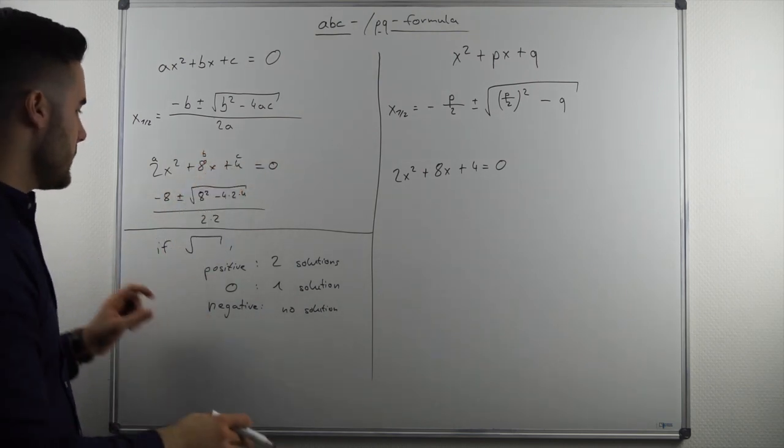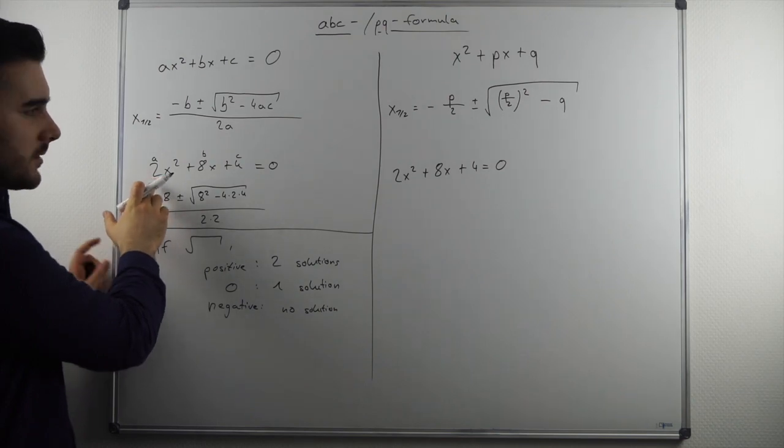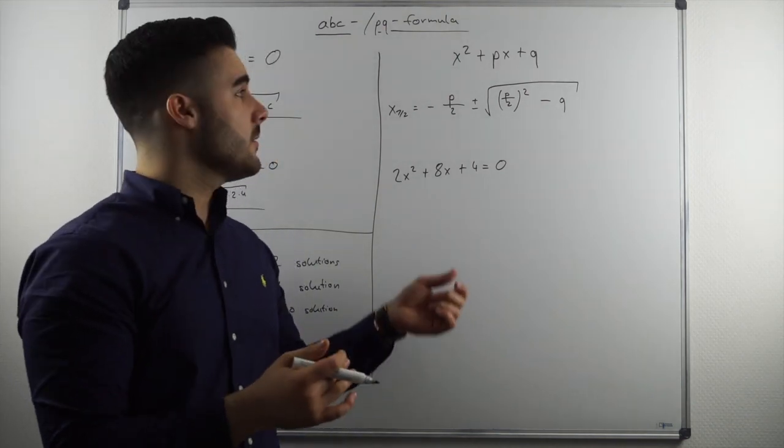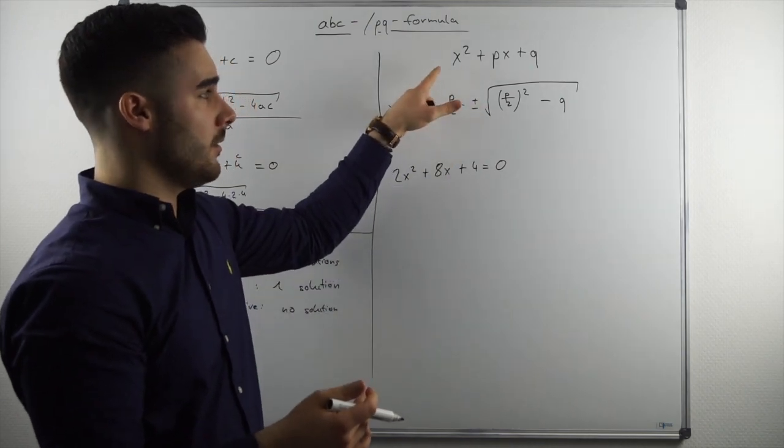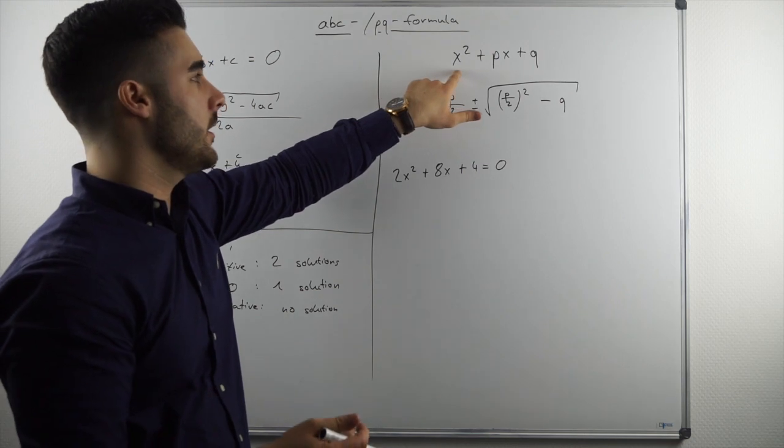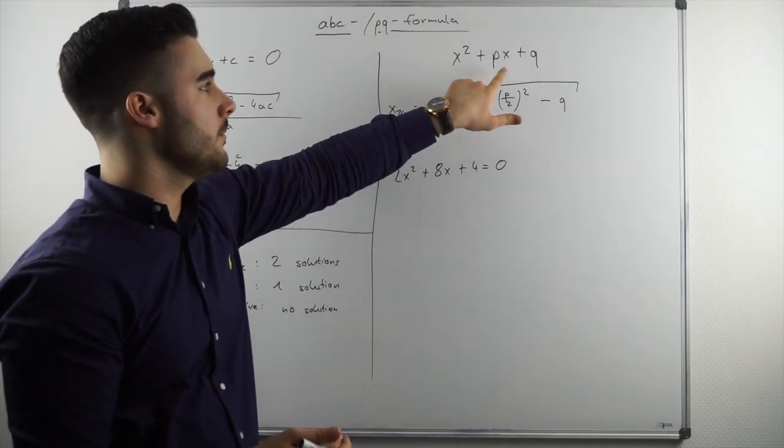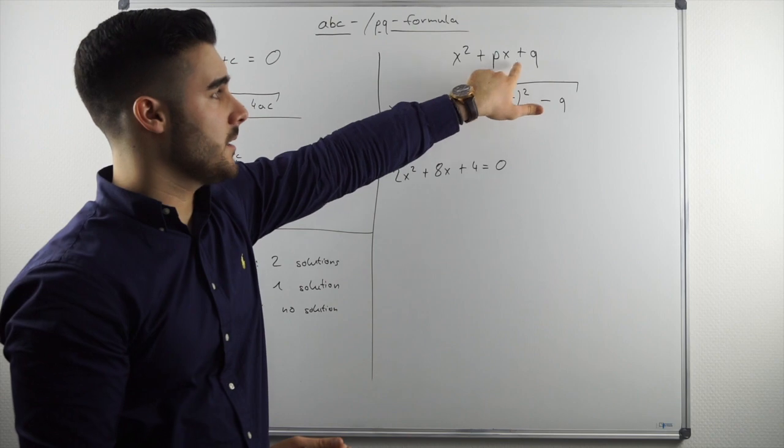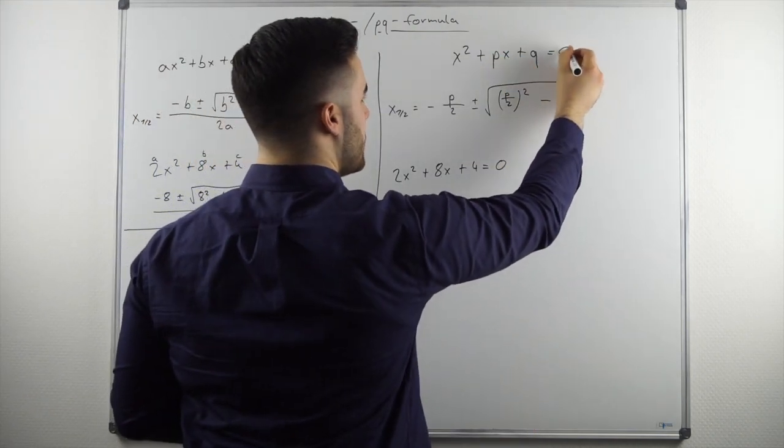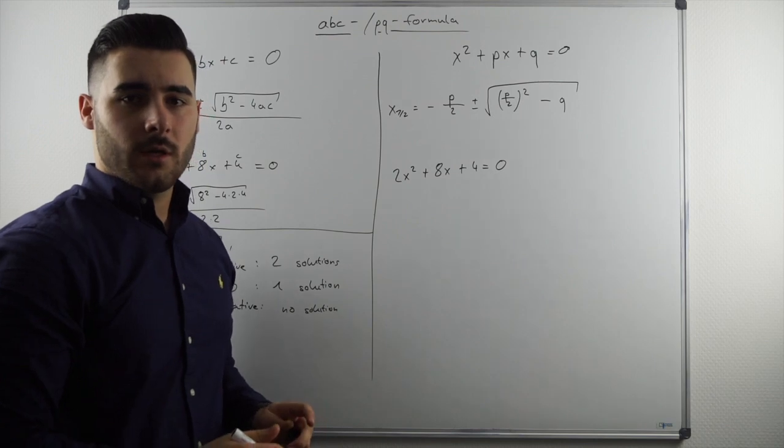However, functions do not always look like this, so they don't always have this normal form. Functions also sometimes look like that, so that they don't have a coefficient in front of every variable. So that means they can look like x squared plus p times x plus q. And obviously, this is also set equal to zero for our calculation.